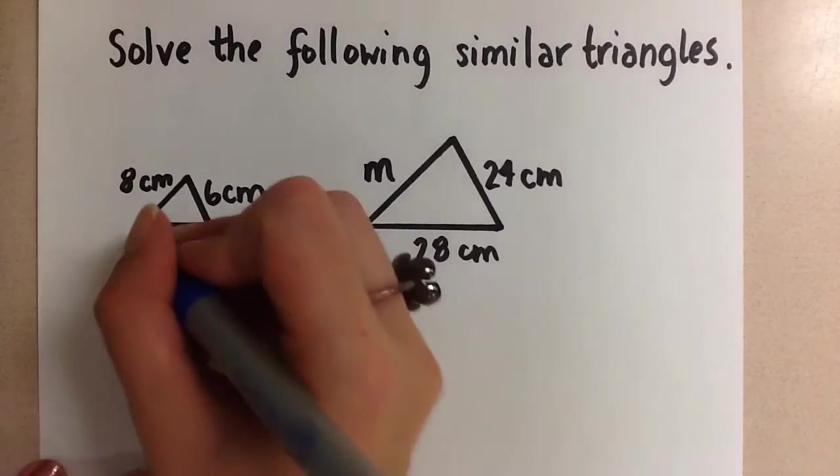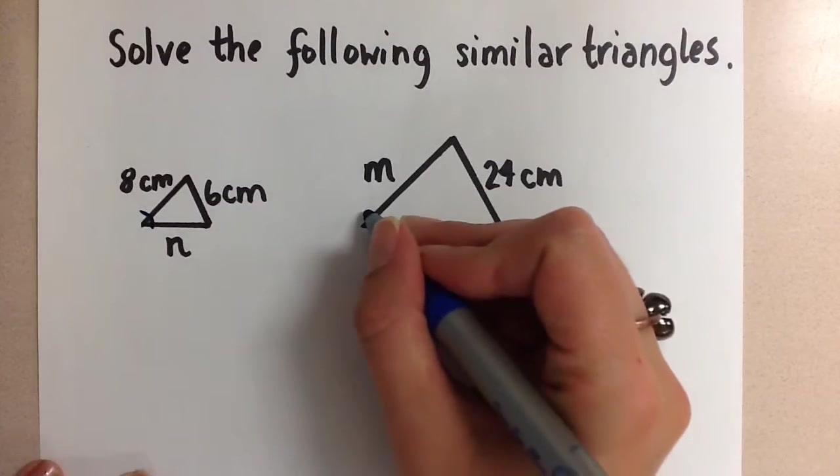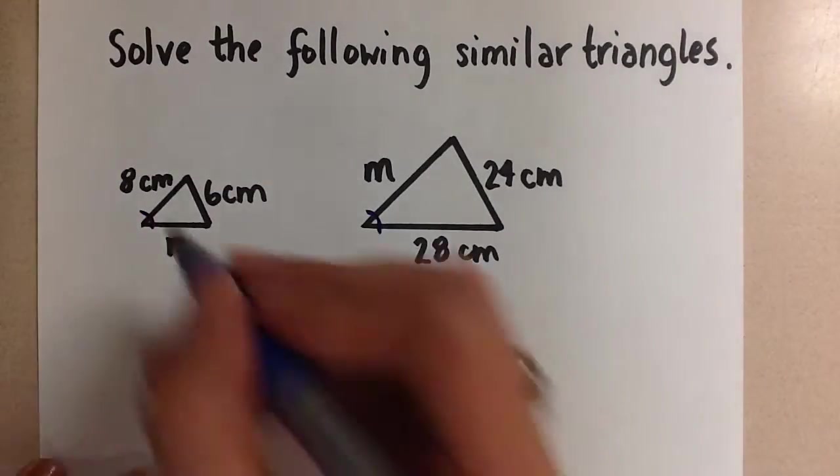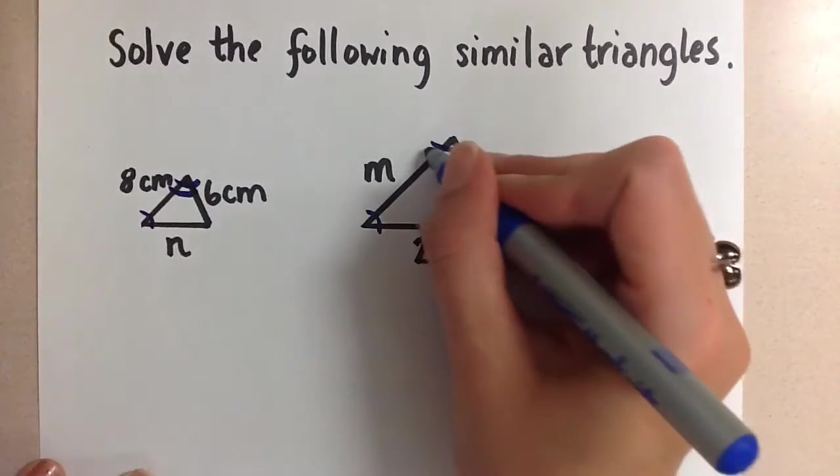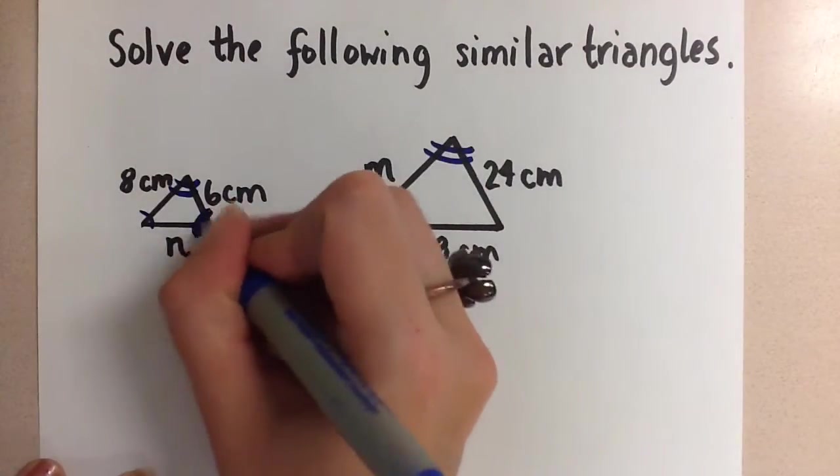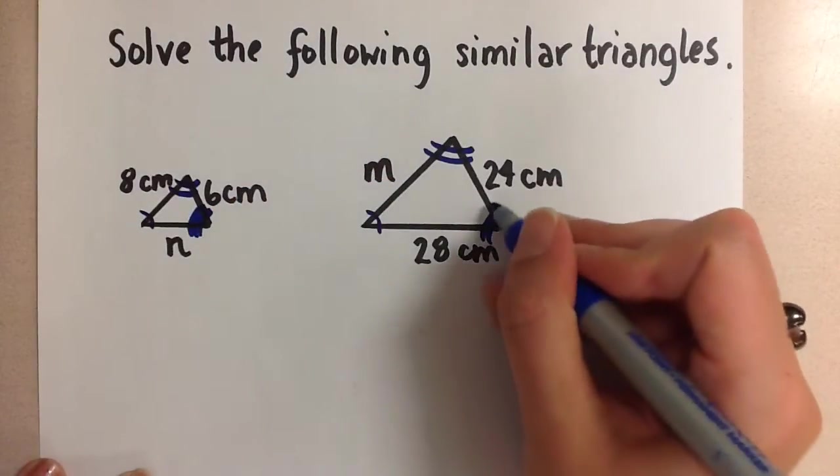That means that this angle here is equal to this angle here, this angle is equal to this angle, and this one is equal to this one.